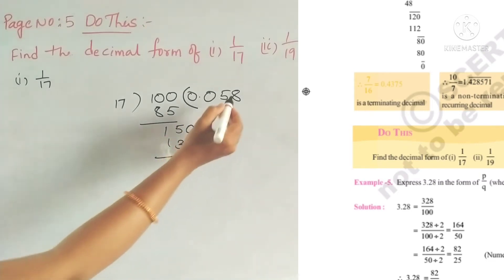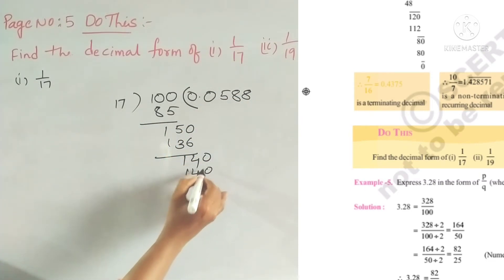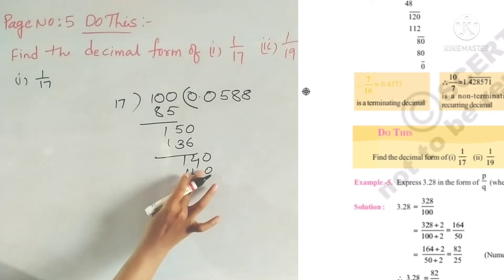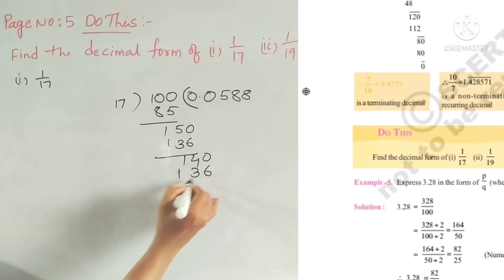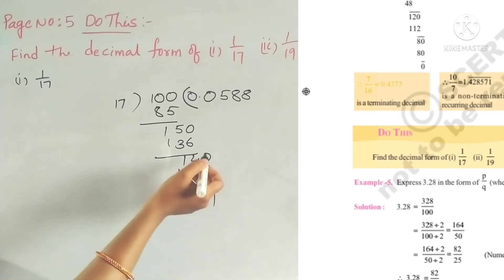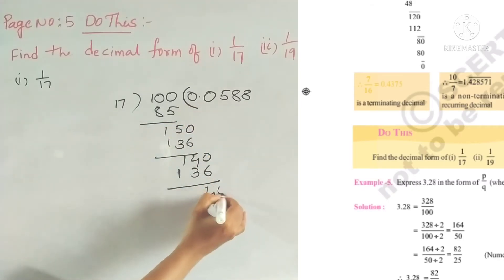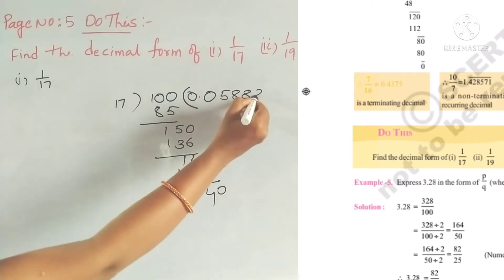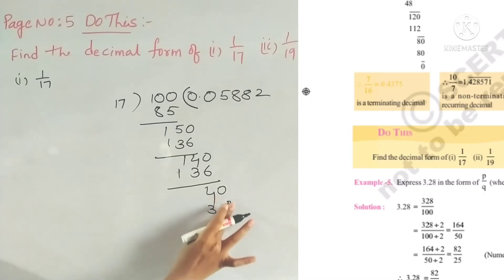Again, 17 eights are 136. 140 minus 136 gives remainder 4. We put 0. Then 17 twos are 34. 40 minus 34 gives remainder 6. So 6 will come.